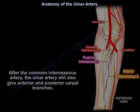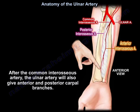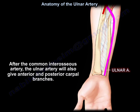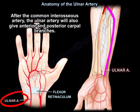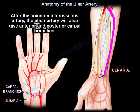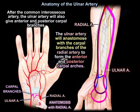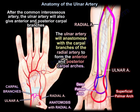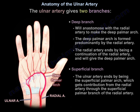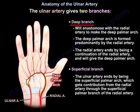After the common interosseous artery, the ulnar artery will give anterior and posterior carpal branches. The ulnar artery will also give a deep branch, which will anastomose with the radial artery to make the deep palmar arch.